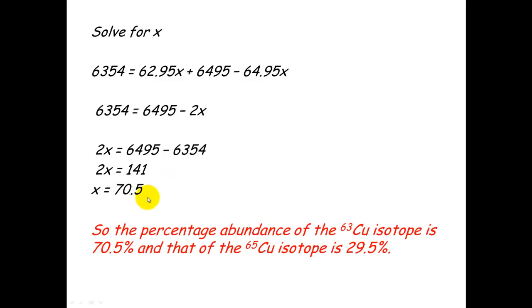And X equals 70.5. So that means that the percentage abundance of copper-63 is 70.5, and so the percentage abundance of copper-65 has to be 100 minus 70.5, which equals 29.5. That's going to be the hardest one of those that you get.